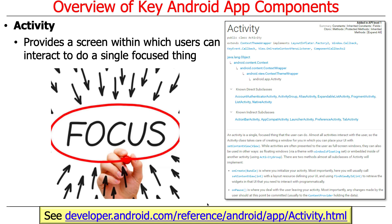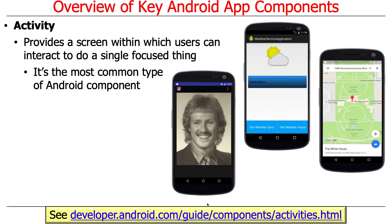So what's an activity? An activity provides a screen, which can be further subdivided by things called fragments, which users can interact with to do a single focused thing. Typically, they give you something that the application wants you to be able to do — enter data, see the results of data, browse through stuff, whatever. So an activity is kind of the main user-facing capability, and it's easily the most common type of Android component.